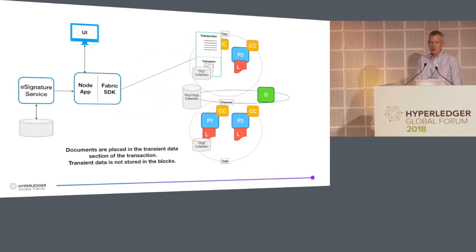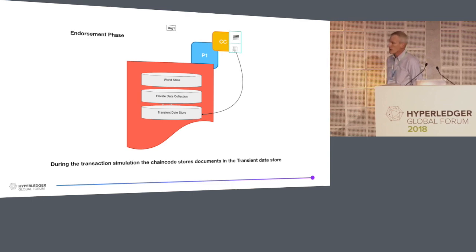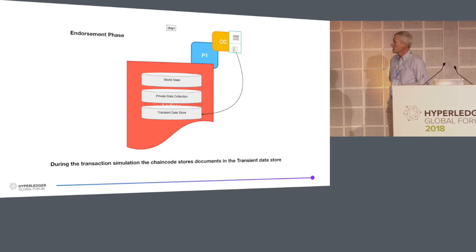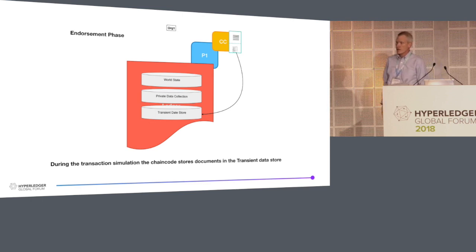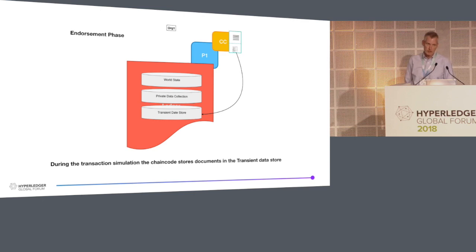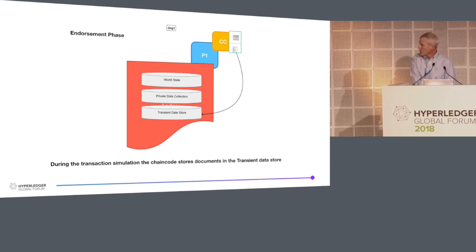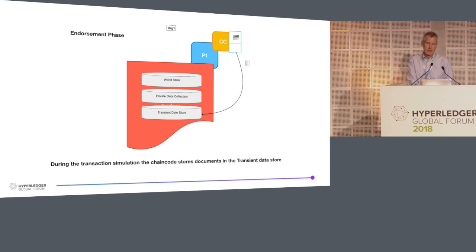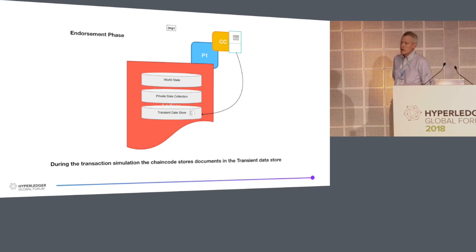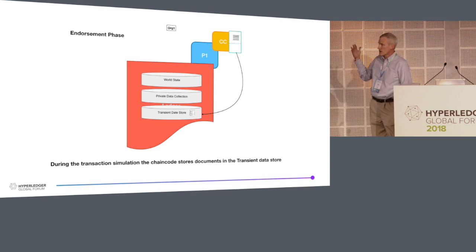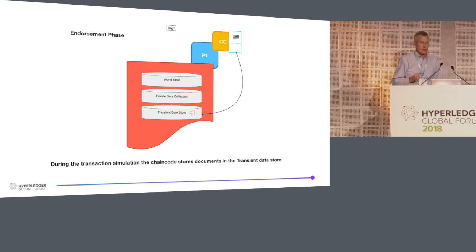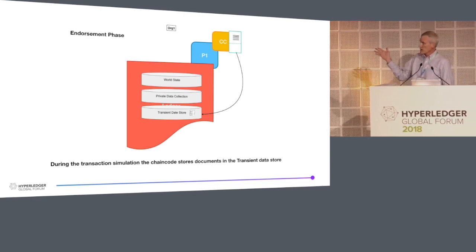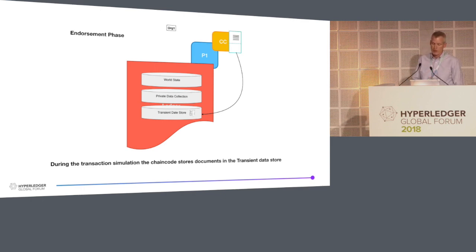Just like before, this transaction gets sent to the peer and the peer forwards it to the chaincode. In the endorsement phase, the chaincode will operate as it did — in this case, it'll have an instruction to store that document data into the private data collection. But at this point it can't put it into the real private data collection, so that data goes into what's called the transient data store. It'll sit there during the endorsement and validation phase, and then get used later in the validation phase if the transaction goes through. If the transaction does not go through, it'll get cleaned up out of here after some number of blocks, which is a configurable parameter.